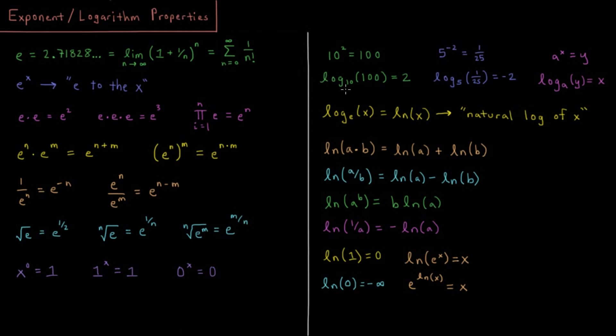So the log base 10 of 100 is equal to 2. This says what power do I need to take the number 10 to to get the number 100, and the answer is 2. If I take 10 squared, I get 100.